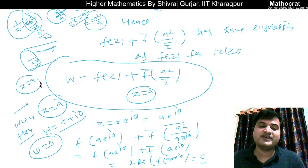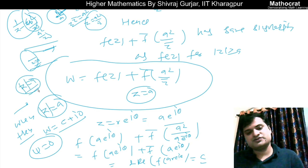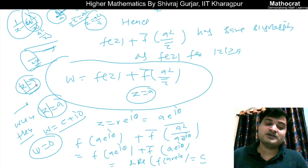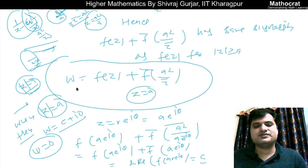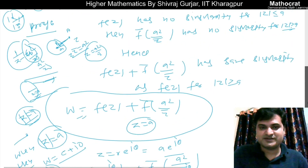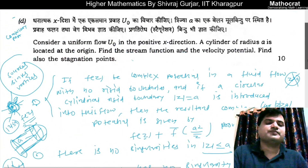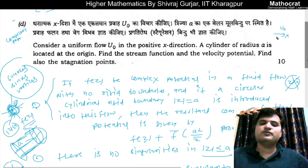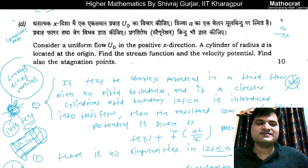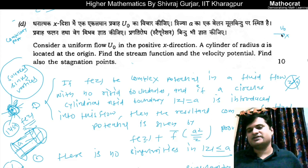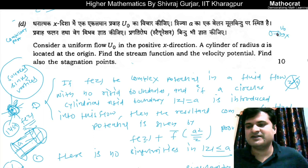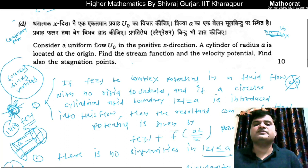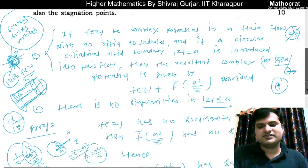We check that modulus z equals A is indeed a rigid boundary. When z = ae^(iθ), we substitute into w = F(z) + F-bar(a²/z̄). Since z·z̄ = a² on the boundary, we get w equals F(ae^(iθ)) + F-bar(ae^(iθ)), which equals twice the real part of F — a purely real quantity. So the imaginary part (stream function ψ) is constant on modulus z = A, confirming it is a rigid streamline boundary.